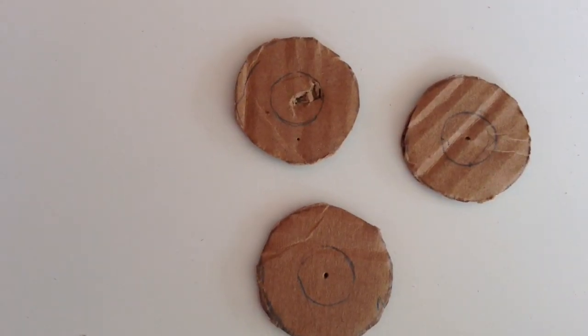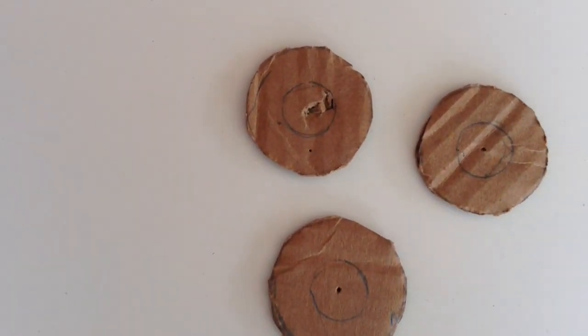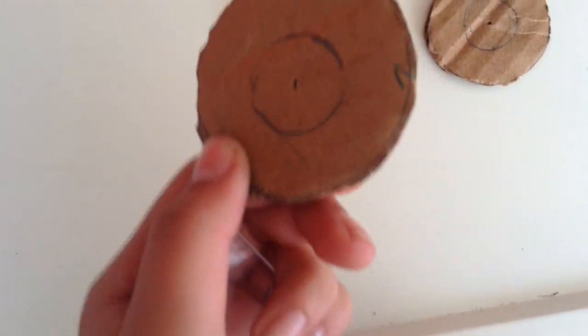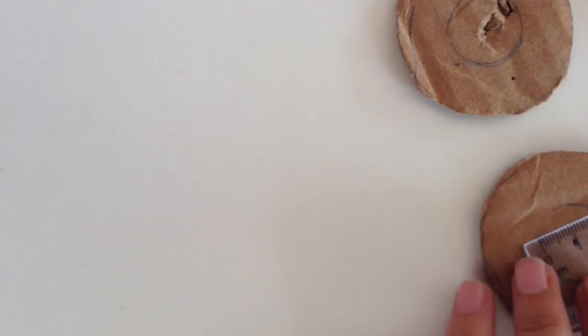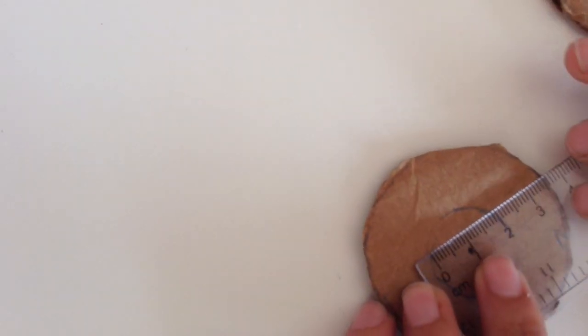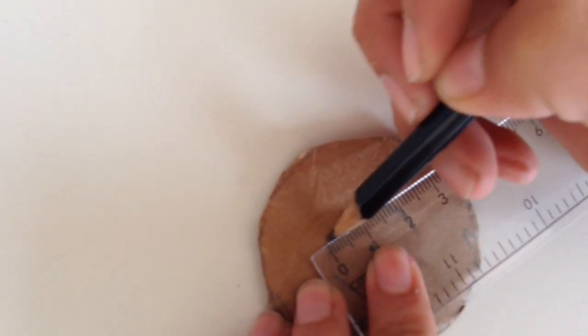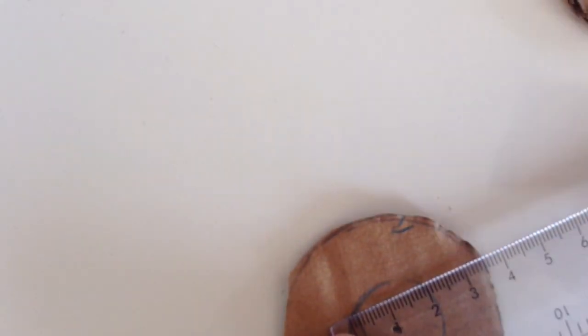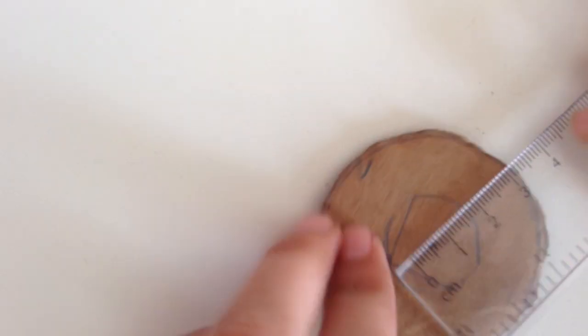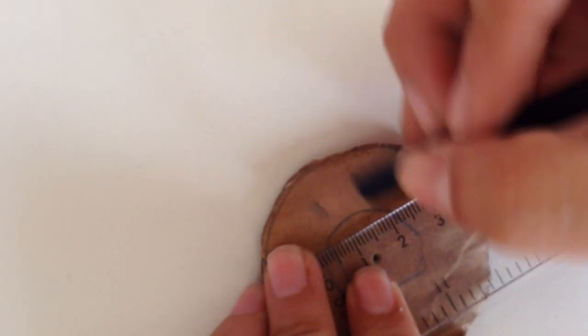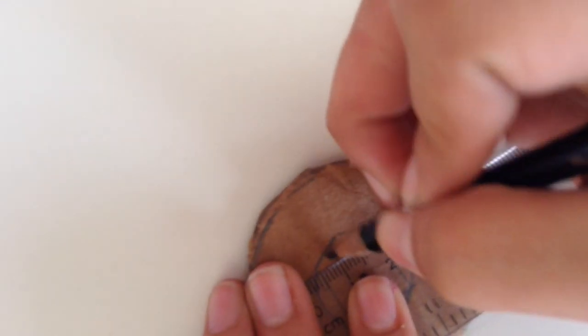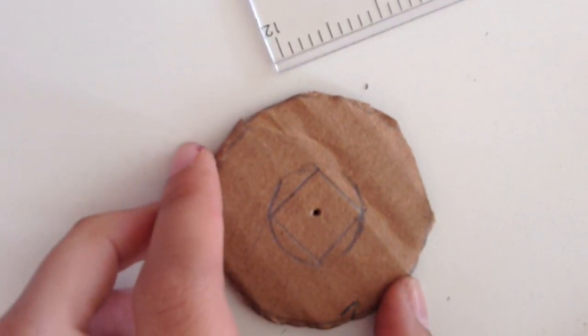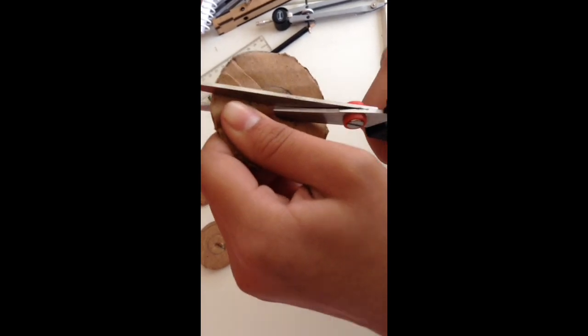Now you have these three figures. Inside of the smallest circle, you have to draw a square. Each side has to measure about 1 cm and a half. Make this with the other two circles and cut it.